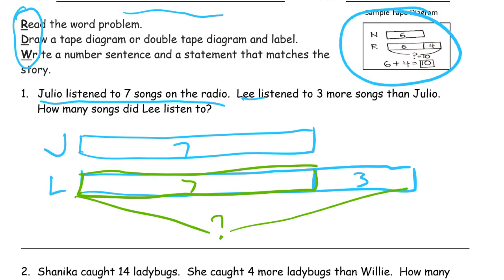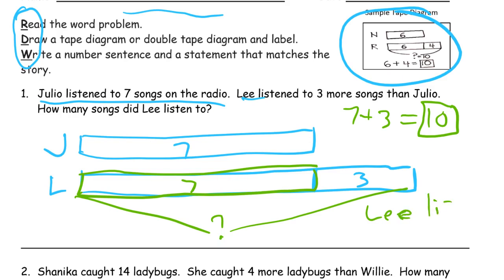Seven and three — partners to ten. I can just write a ten in there; I like to leave it as a question mark first. I'm going to write my number sentence and my answer statement. So my number sentence is the seven plus the three put together — that's how many songs Lee has. So that's seven plus three equals ten, and I'm going to circle or box that ten because that's the number I was looking for. And my statement: Lee listened to ten songs.